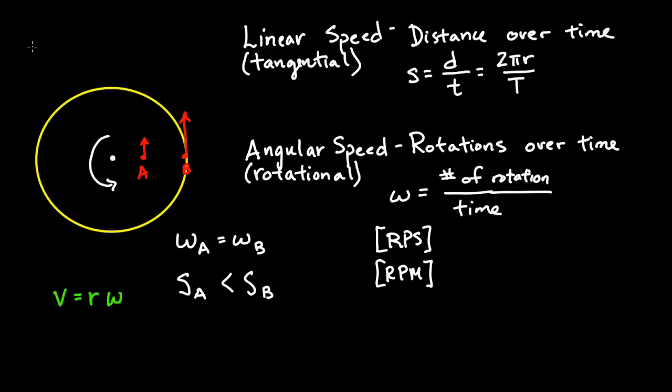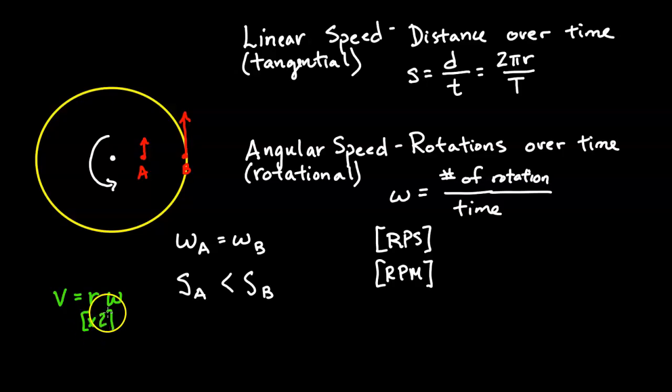Here's a practice question. If an object moves from location A to location B, where B is twice the distance from the center as A, then R is two times greater. Since linear speed equals rω, the linear speed is also two times greater — the object at B has twice the speed of the object at A. However, the angular speed is still the same, since they're on the same platform.